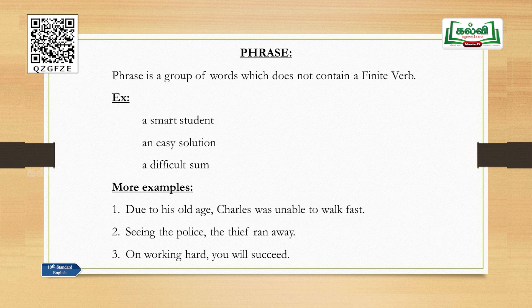'On working hard, you will succeed.' The first part 'on working hard' has no finite verb — it is a phrase. 'You will succeed' is a clause. Now you understand what a phrase is. A phrase is a group of words with no finite verb; when we add a finite verb to it, it becomes a clause.